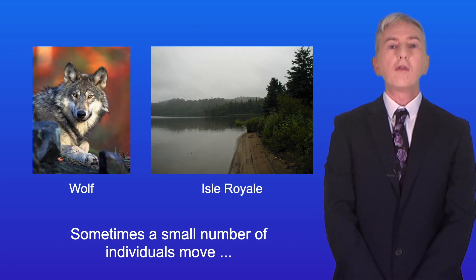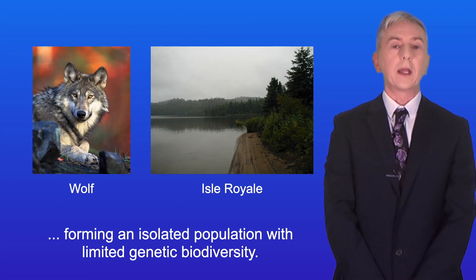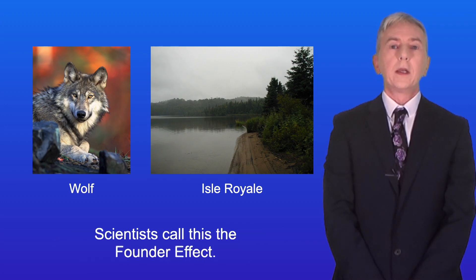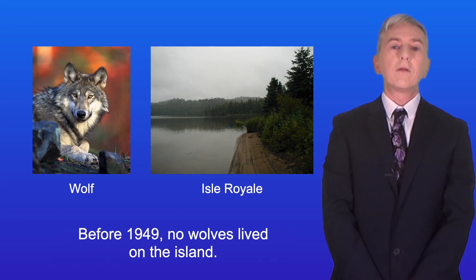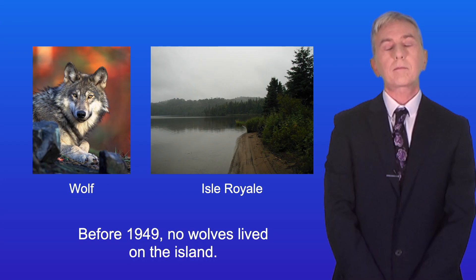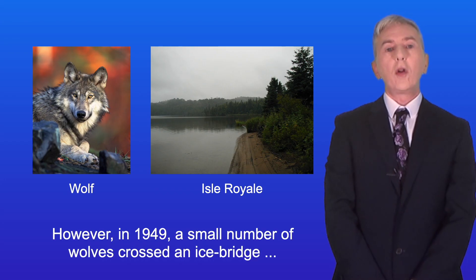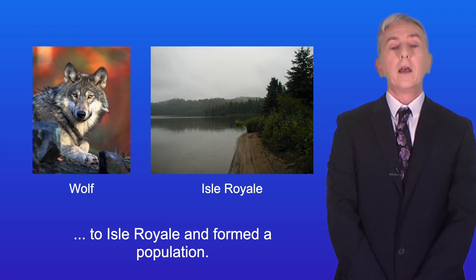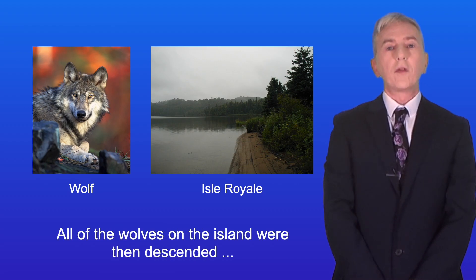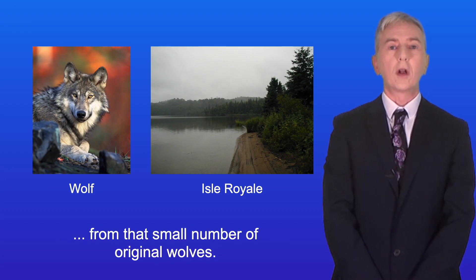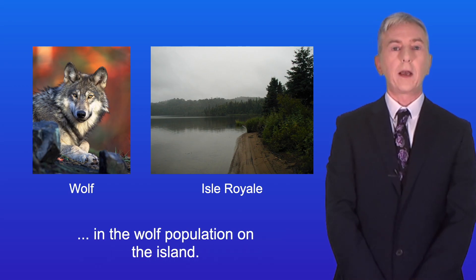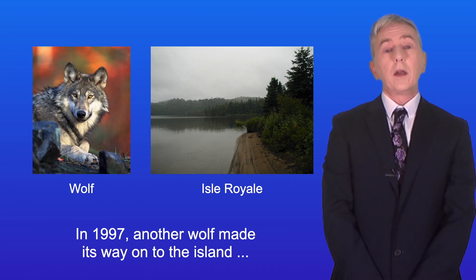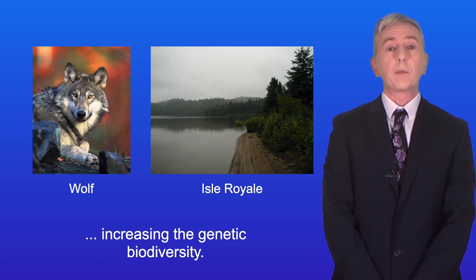Sometimes a small number of individuals move, forming an isolated population with limited genetic biodiversity — scientists call this the founder effect. For example, Isle Royale in the United States is isolated from the mainland, and before 1949 no wolves lived on the island. In 1949 a small number of wolves crossed an ice bridge to Isle Royale and formed a population. All wolves on the island were descended from that small original group, resulting in low genetic biodiversity. In 1997 another wolf made its way onto the island, increasing the genetic biodiversity.